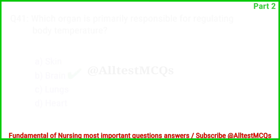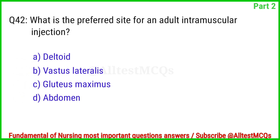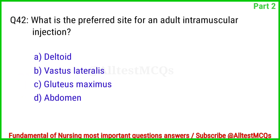Question No. 42. What is the preferred site for an adult intramuscular injection? The right answer is Option A: Deltoid.